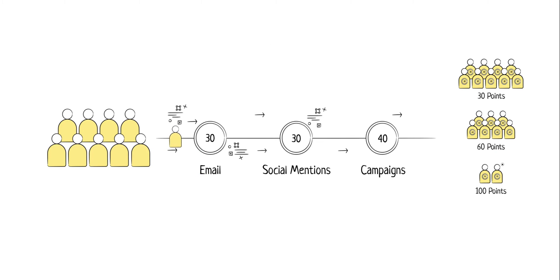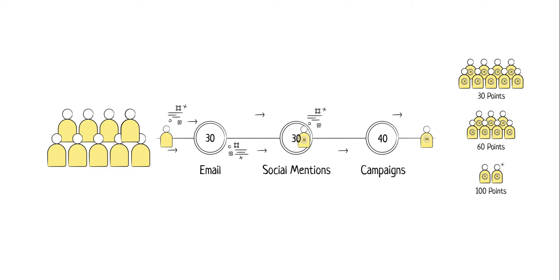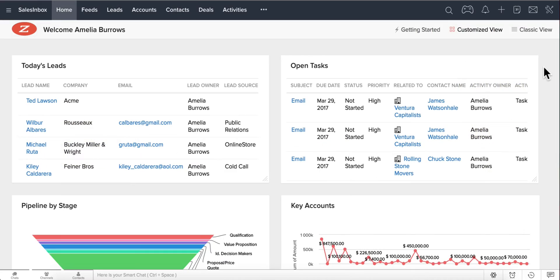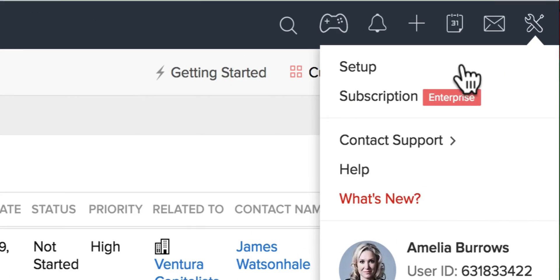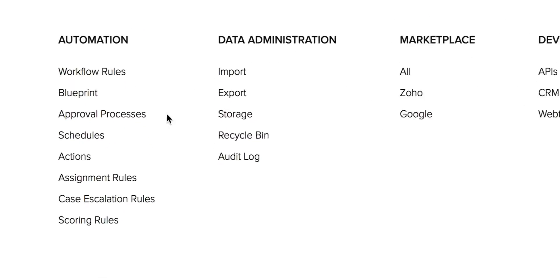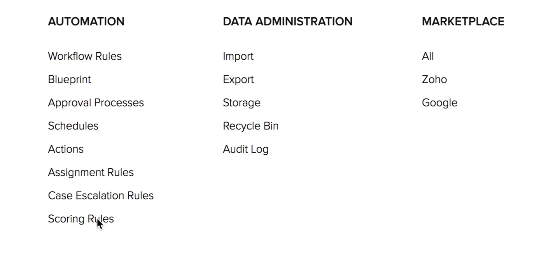Scoring rules in Zoho CRM lets you prioritize your leads to ensure that you target the ones that are most likely to convert. To create scoring rules, login to Zoho CRM, click on Setup, and under Automation you will see scoring rules settings.